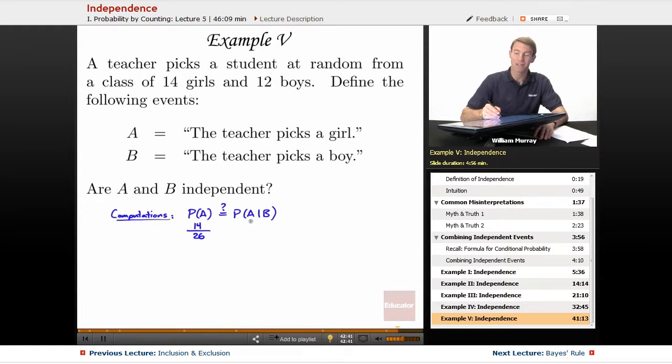Now what's the probability of A given B? That's the probability that if you know that you picked a boy, what's the probability that you picked a girl? Which is zero. Well, is 14 over 26 equal to zero? Of course not. So that tells us that the events are not independent, in fact, they are dependent.